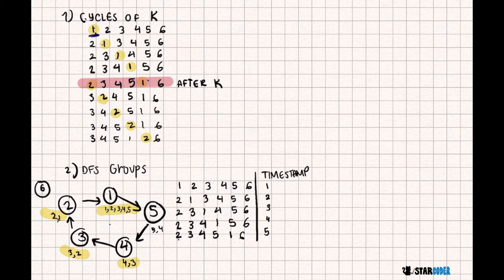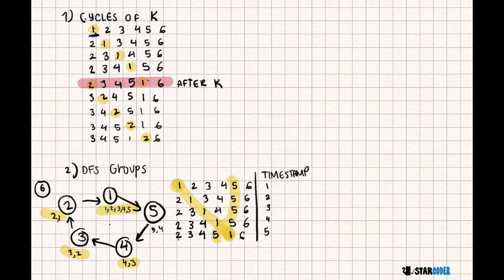This question is actually really similar to a previous Silver question — 2020 February Swappity Swap — so the code is pretty similar. The basic idea is to create groups by following a cycle. Starting at position 1, we follow the path and end at position 5. Since the path is the same regardless of starting position, we then follow position 5's path, then 4's, then 3's, then 2's, and finally end back at 1, completing the cycle.